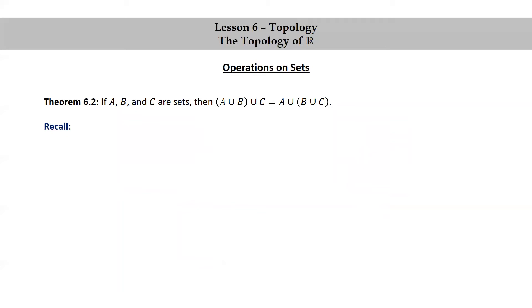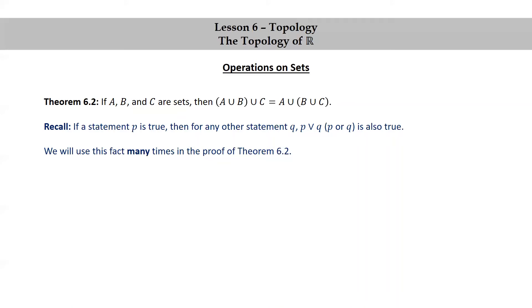Before writing out the proof, I want to recall one thing from basic logic. If a statement P is true, then for any other statement Q, P or Q is also true. We're going to use this fact many times in the proof. For example, if X in A is true, then we could say X in A or X in B is true. As long as you know one of them is true, you could put anything else after the or, and the statement itself will be true by the definition of or.